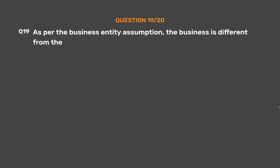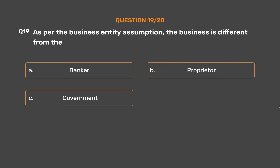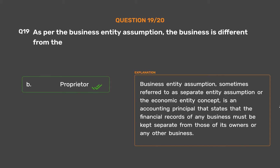Question No. 19: As per the Business Entity Assumption, the business is different from which of the following? Option A: Banker. Option B: Proprietor. Option C: Government. The correct answer is Option B: Proprietor. The Business Entity Assumption, sometimes referred to as the separate entity assumption or economic entity concept, is an accounting principle that states that the financial records of any business must be kept separate from those of its owners or any other business.